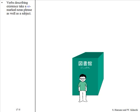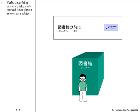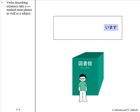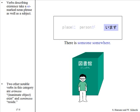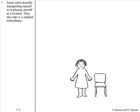Verbs describing existence take a ni-marked noun phrase as well as a subject. Two other notable verbs in this category are arimasu and sumimasu. Some verbs describe transporting oneself to or placing oneself at a location. They also take a ni-marked noun phrase.